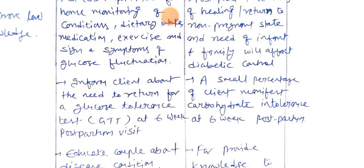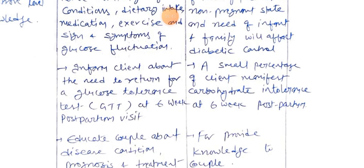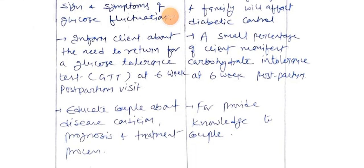Inform the client about the need to return for a glucose tolerance test (GTT) at six weeks postpartum — rationale: a small percentage of clients manifest carbohydrate intolerance at six weeks postpartum. Educate the couple about the disease condition, progress, and treatment — rationale: to provide knowledge to the couple.